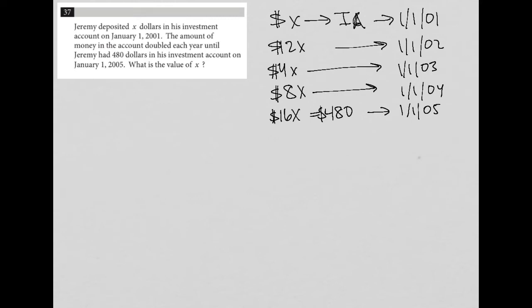So this visual representation of what I just read, which technically is the translate word problem strategy, tells me that I have an equation here where I can just say 16X is equal to 480.